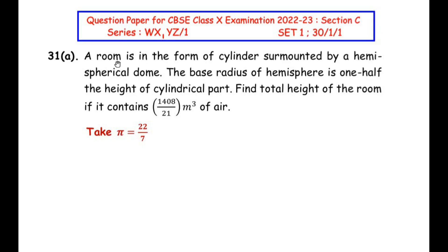A room is in the form of a cylinder surmounted by a hemispherical dome. The base radius of the hemisphere is one half the height of the cylindrical part. Find the total height of the room if it contains 1408/21 cubic meters of air. Take pi as 22/7.